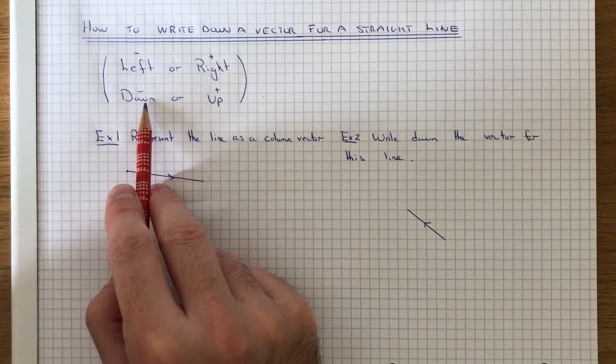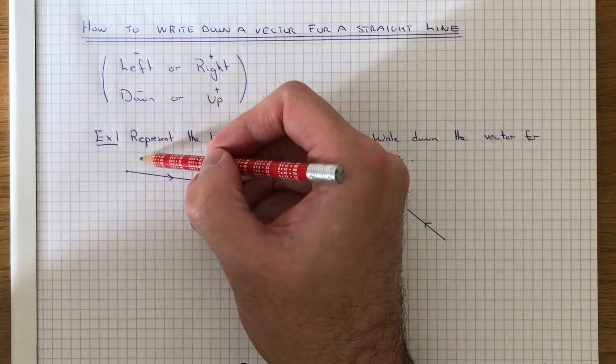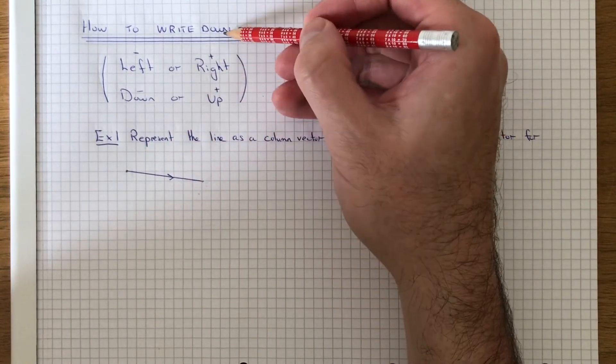The bottom number of the vector will tell you whether you move the point down or up. If the number is negative, you move it down. If it's positive, you move it up.